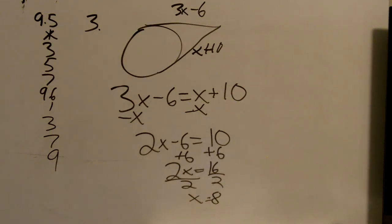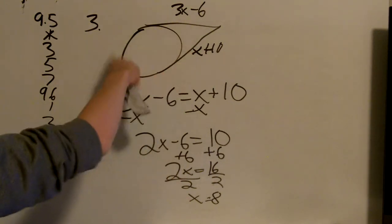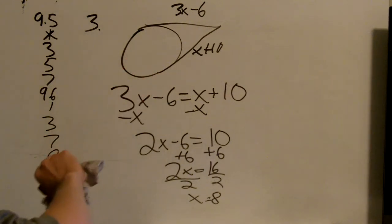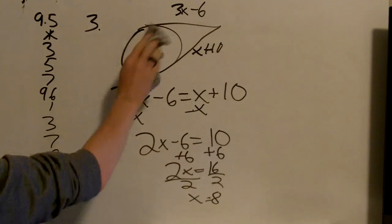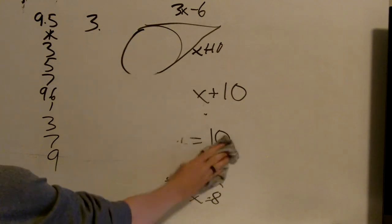And that is all I have to do. x equals 8. So if you see something that looks like this, I think of it as a sideways ice cream cone. If you see a sideways ice cream cone, set them equal to each other.